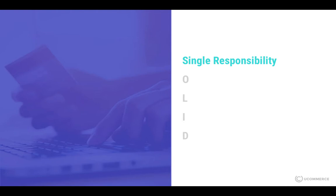What the single responsibility principle usually leads to is greater reusability of components. Taxes are something you're going to use in different aspects of the platform — for products, for services, for fees. Rounding is another great example where that logic needs to be used in multiple places: we need it for tax, but we might also need it for pricing where we want to control how many digits we display a price with. Observing the single responsibility principle enables us to reuse the rounding service both for taxes and for pricing, and anywhere else rounding is required.